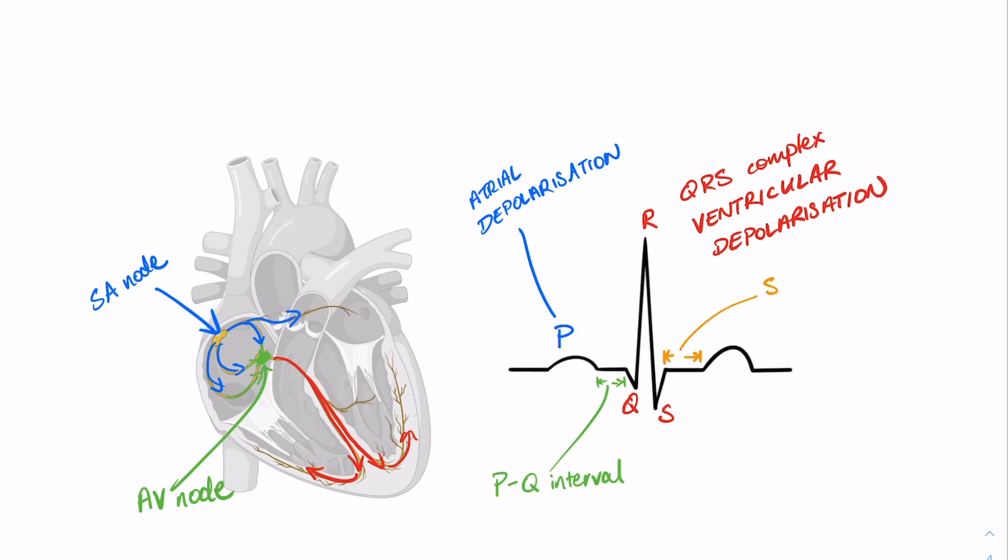After the gigantic, I noticed I said gigantic and not ginormous, after the gigantic QRS complex we have yet another delay called the ST segment or the ST interval and this is just that time of zero potential. Okay so there's no membrane potential and that sits between ventricular depol. What happens after depolarization?